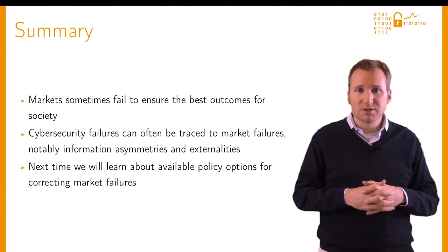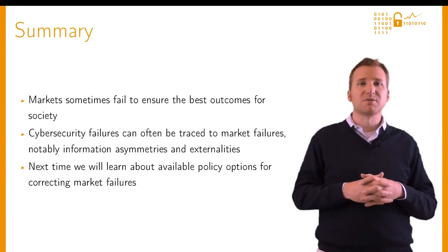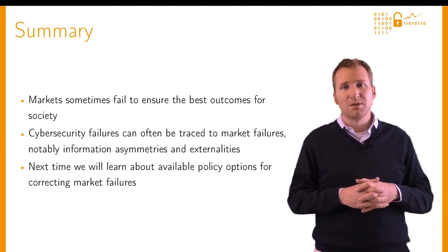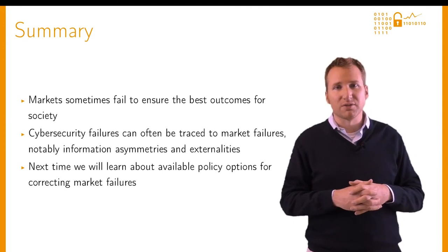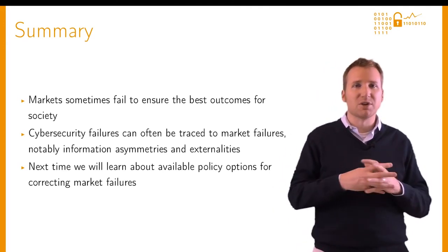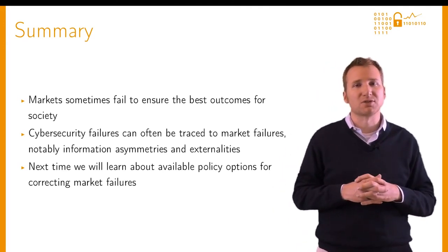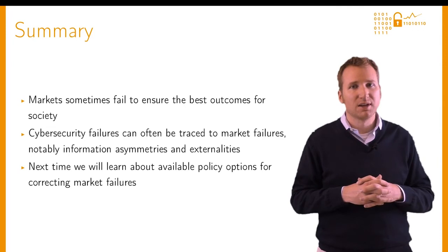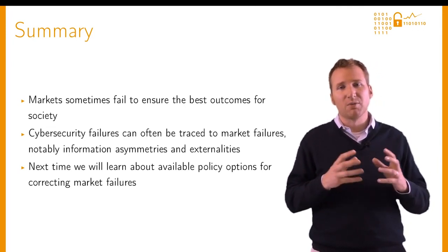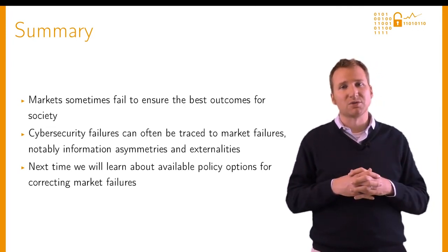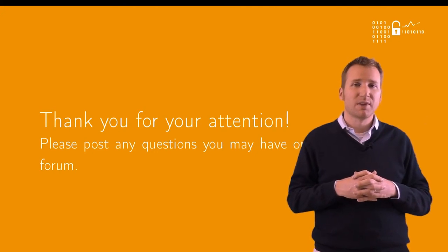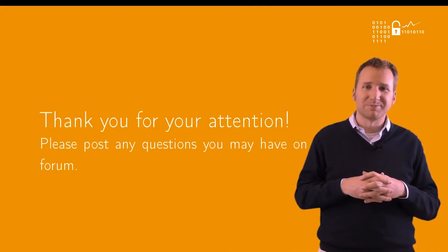To summarize, markets sometimes fail to ensure the best outcome for society. Many failures of security can be traced back to these market failures, particularly information asymmetries and externalities. Next time we'll discuss what can be done about this and what the policy options are for correcting these failures. Thanks for your attention and goodbye.